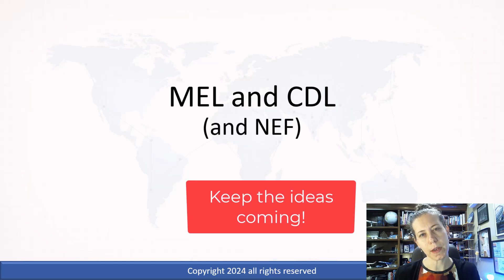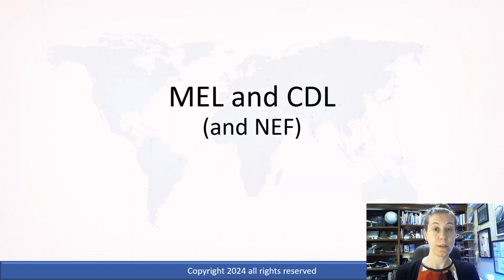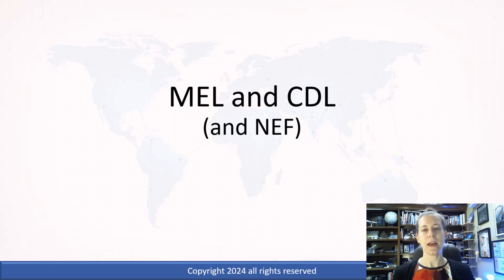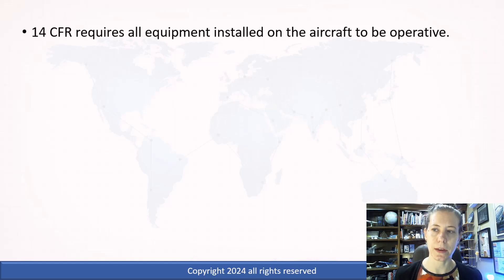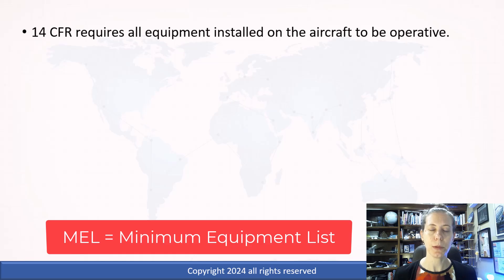This is a very common topic that you would talk about at airlines, especially in operations or for dispatch, because both pilots and dispatchers and also maintenance control deals with these items all the time. The background for why we even have a minimum equipment list is that 14 CFR requires everything on the aircraft to work. However, with a very large complex aircraft, that's impractical.